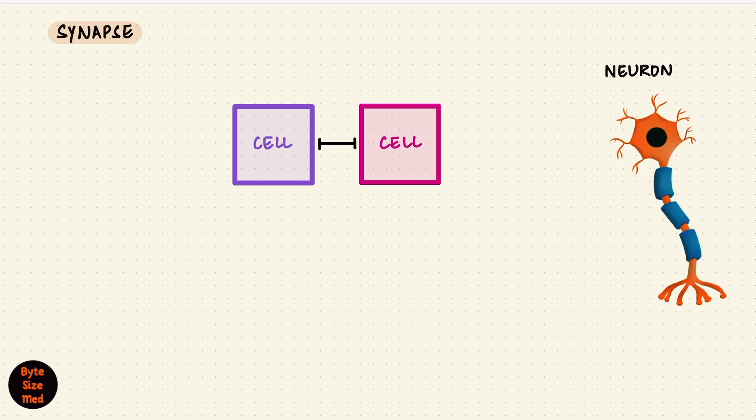A synapse is a site where two cells communicate with each other. Notice I used the word cell and not neuron. That's intentional. Though we classically think of synapses occurring between two neurons, and that is certainly the most popular type of synapse in the body, it's not the only kind.